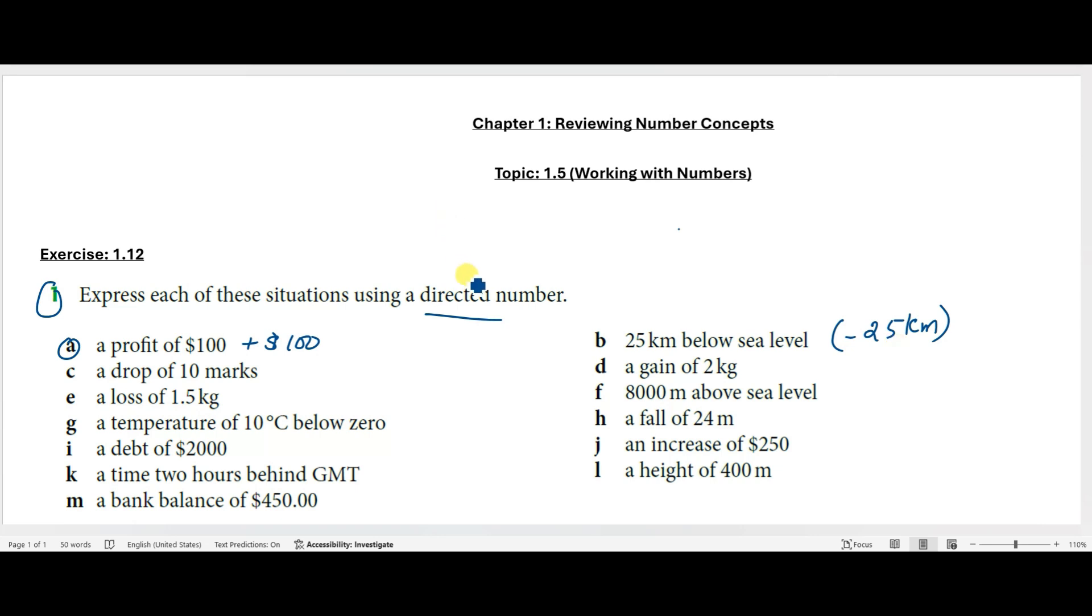A drop of 10 marks means negative 10 marks. Then a gain of 2 kg can be represented as +2 kg. A loss of 1.5 kg can be written as -1.5 kg.